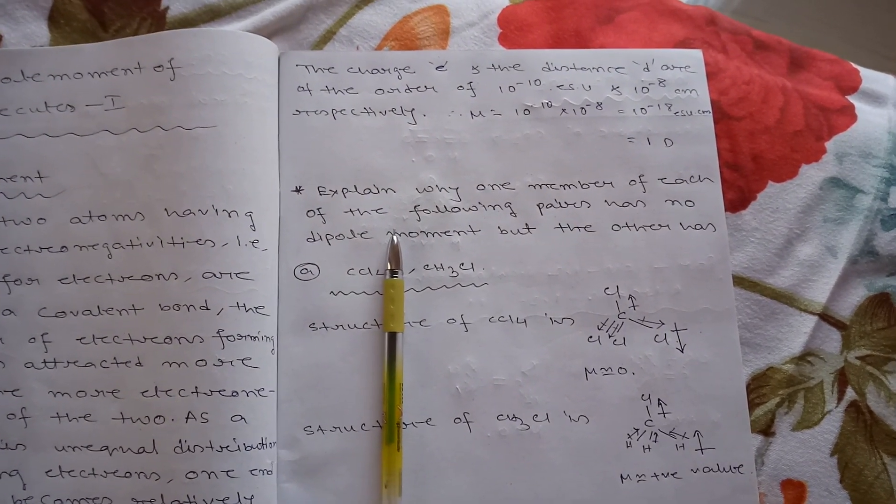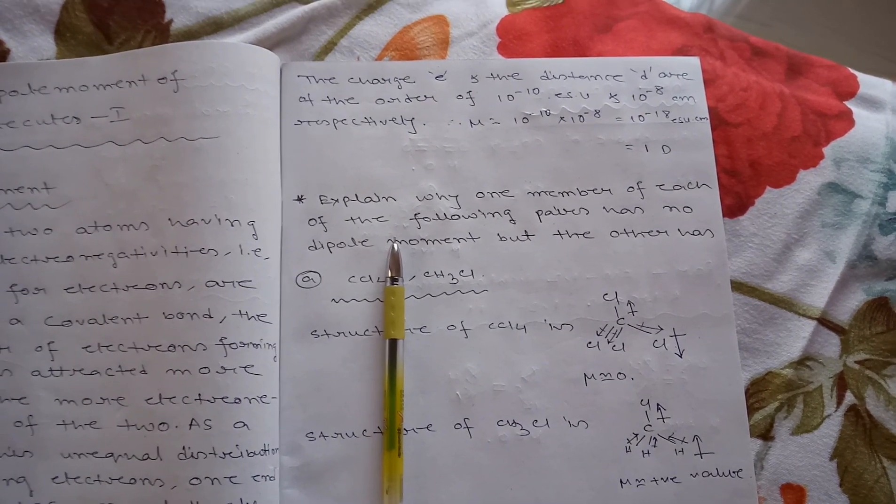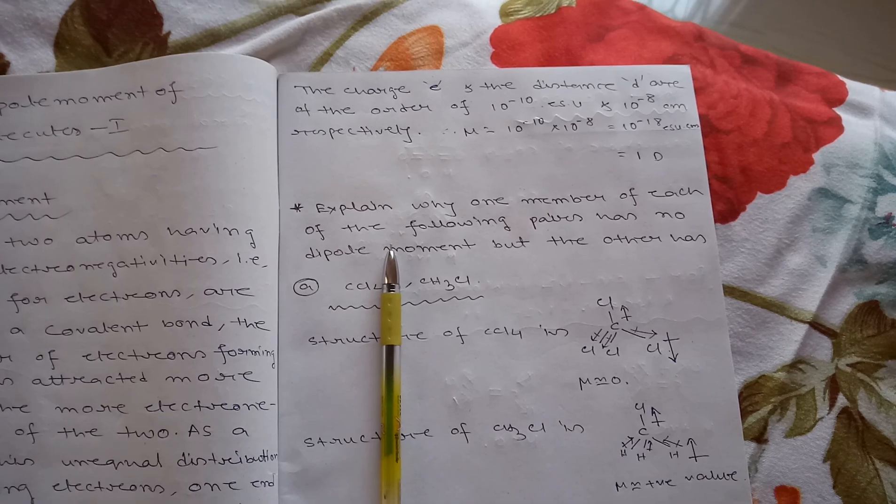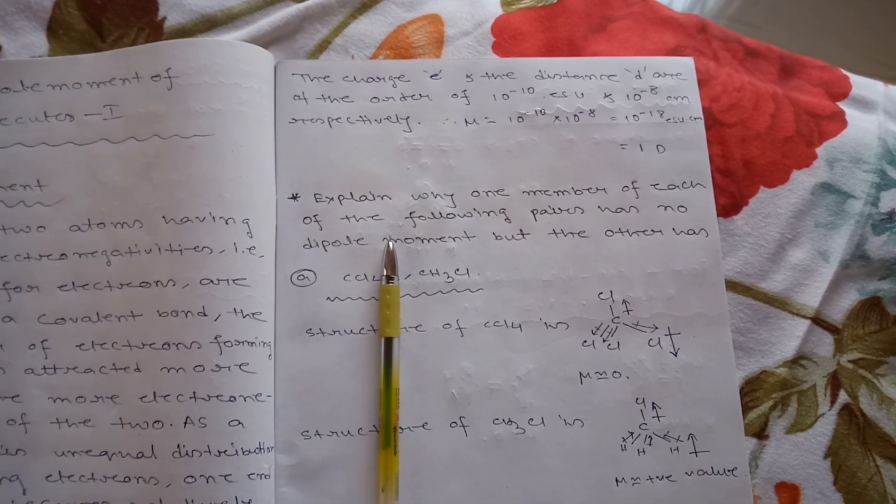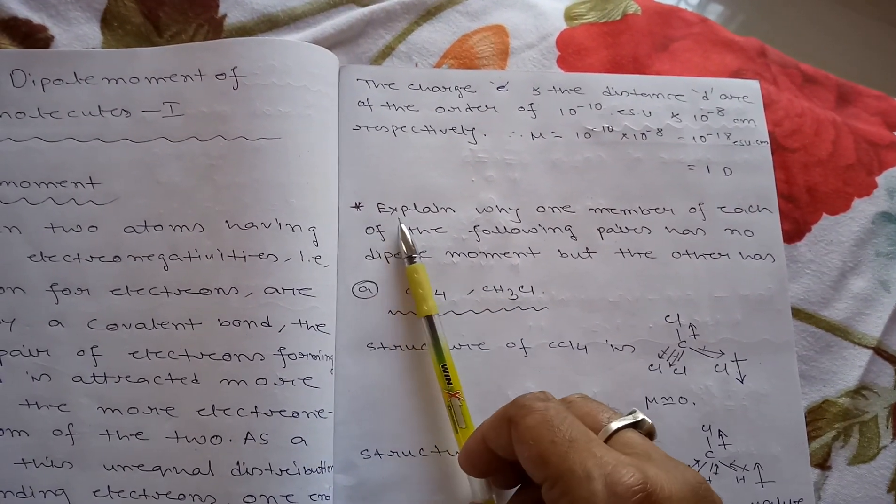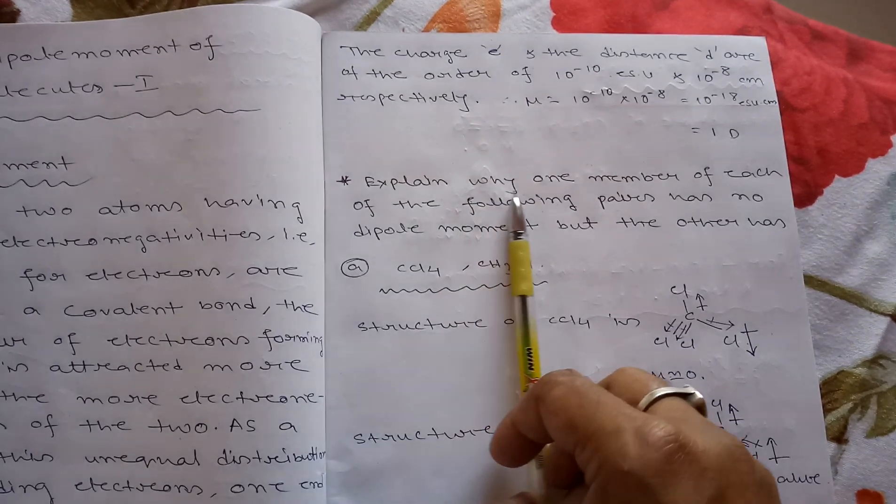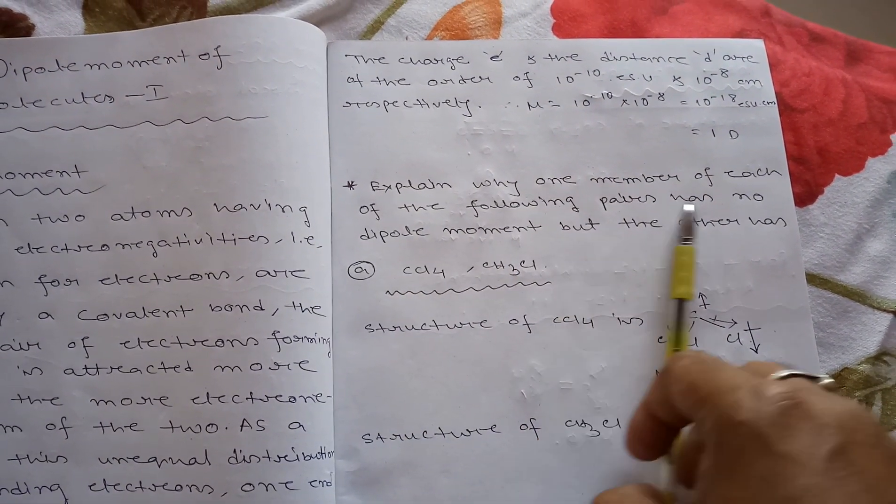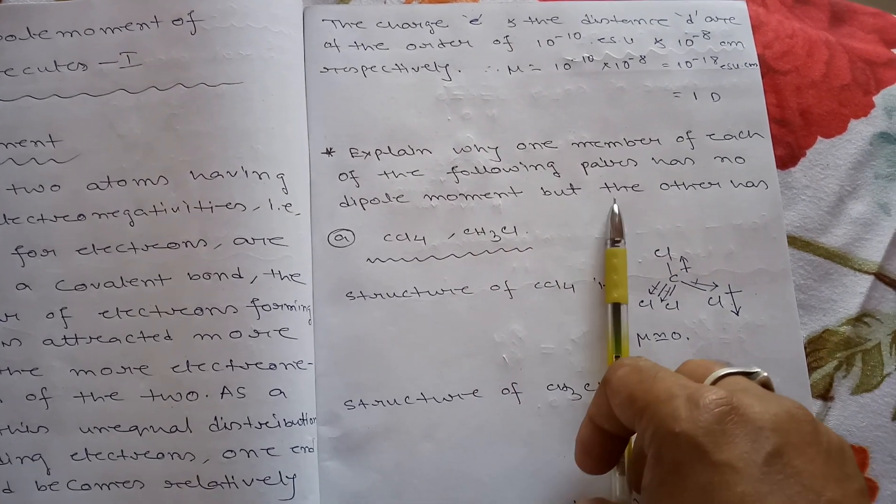A symmetrical polyatomic molecule possesses no dipole moment because individual dipole moments of the bonds cancel each other. Now we discuss some examples. Explain why one member of each of the following pairs has no dipole moment but the other has.